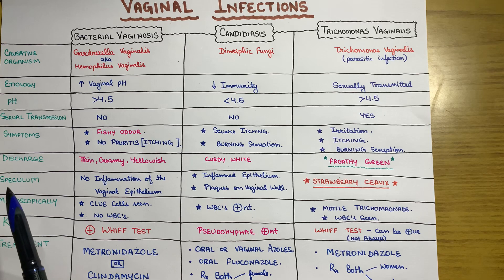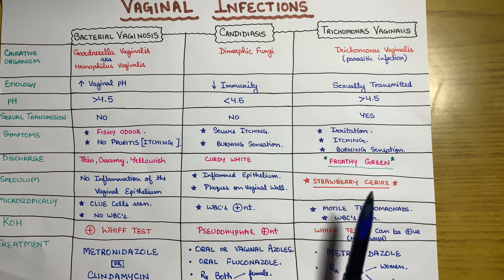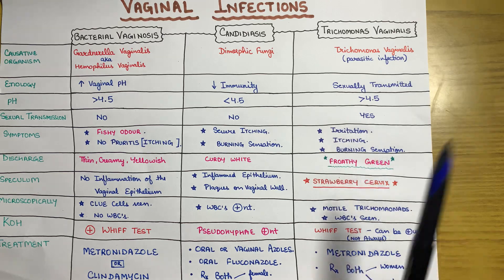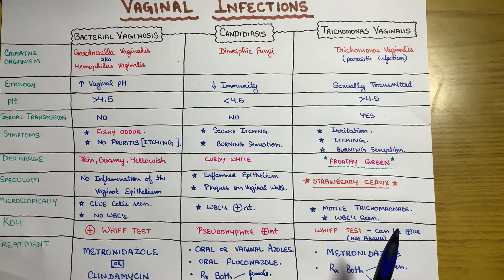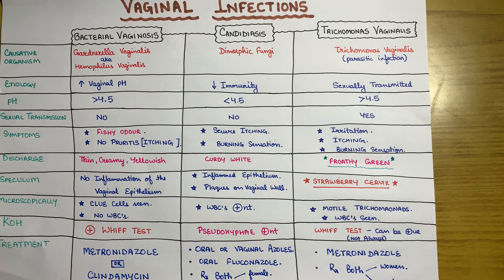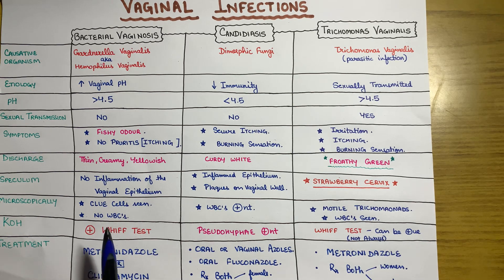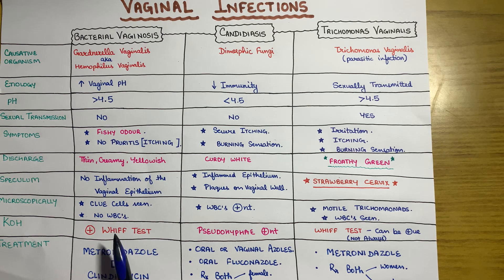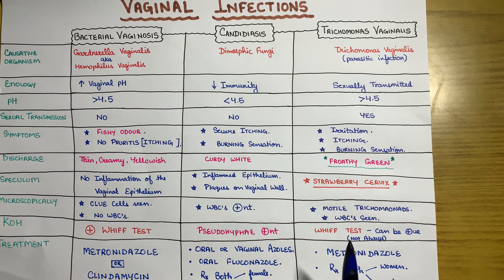On speculum examination, strawberry cervix is seen in trichomonas vaginalis infection — a highlighted and important finding. Microscopically, motile trichomonas parasites can be seen under the microscope, and WBCs are also seen. The whiff test with KOH can be positive but is negative in most cases; whiff test is specifically associated with bacterial vaginosis when choosing a single answer.